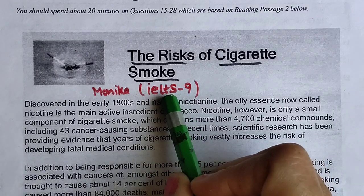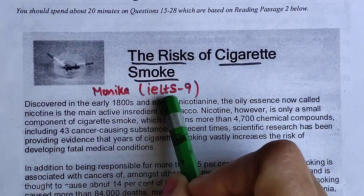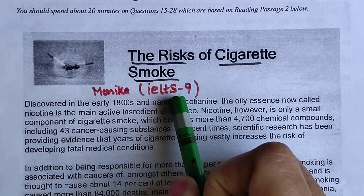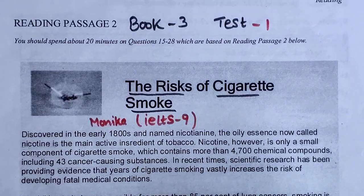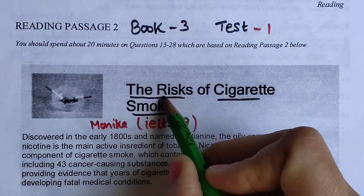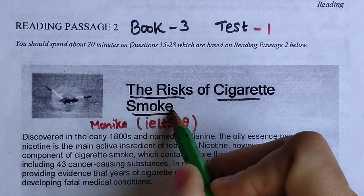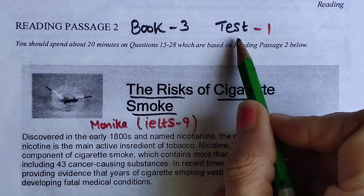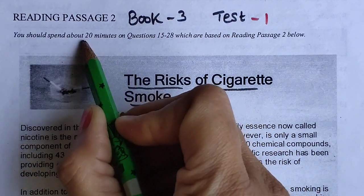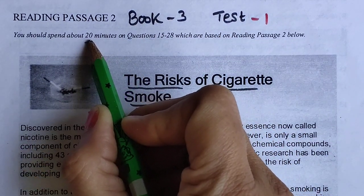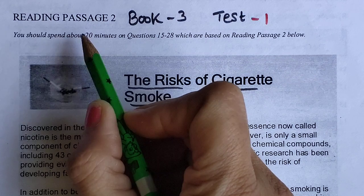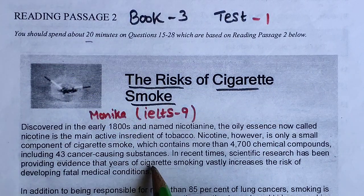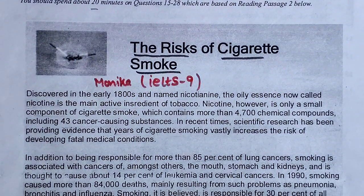Hello everyone, I am Monica from IELTS Line. Please like and subscribe this channel for my motivation. Here I am going to do this reading — the reading title is 'The Risk of Cigarette Smoke', taken from Book Number Three, Test One. We will try to finish within 20 minutes; if you have done many practices you can finish it within 15 or 16 minutes.